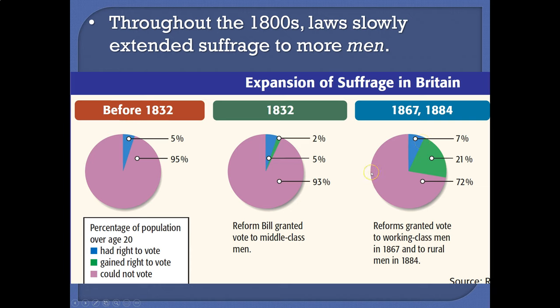Now, keep in mind that 50% of the population couldn't vote at all, just based on gender. So if you're thinking of this as just the male population, over half of men are voting as we get to the end of the 1800s.